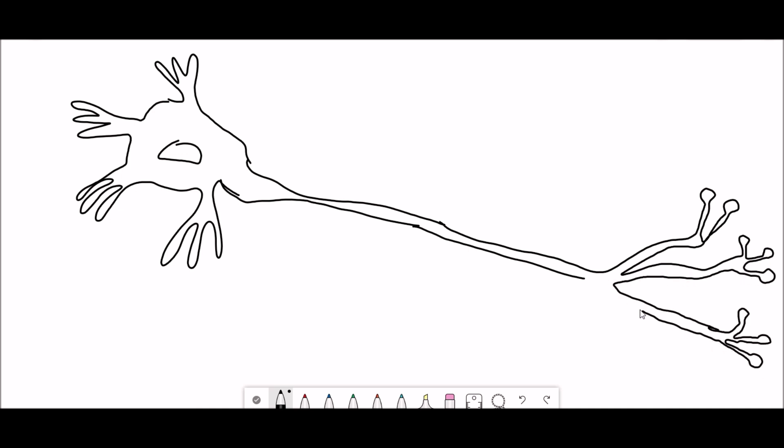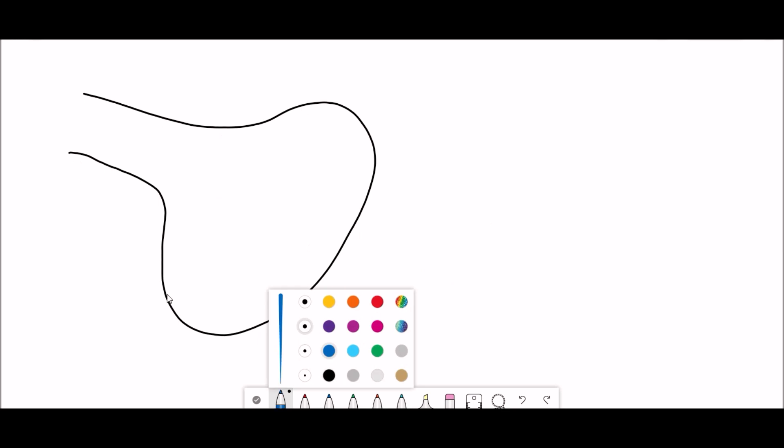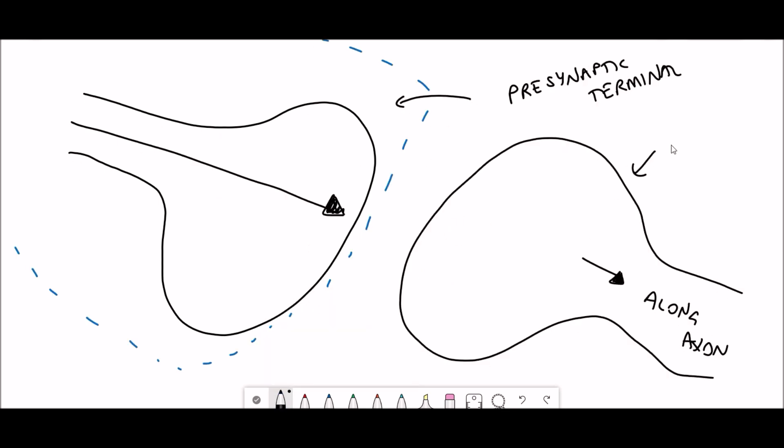What I've drawn out here is a neuron. This is a very generic looking neuron and what neurons do is they pass on signals and they do this in one singular direction and then at the end of the neuron it can form a chemical signal to pass on the signal to the next neuron and this is the process of neural transmission.